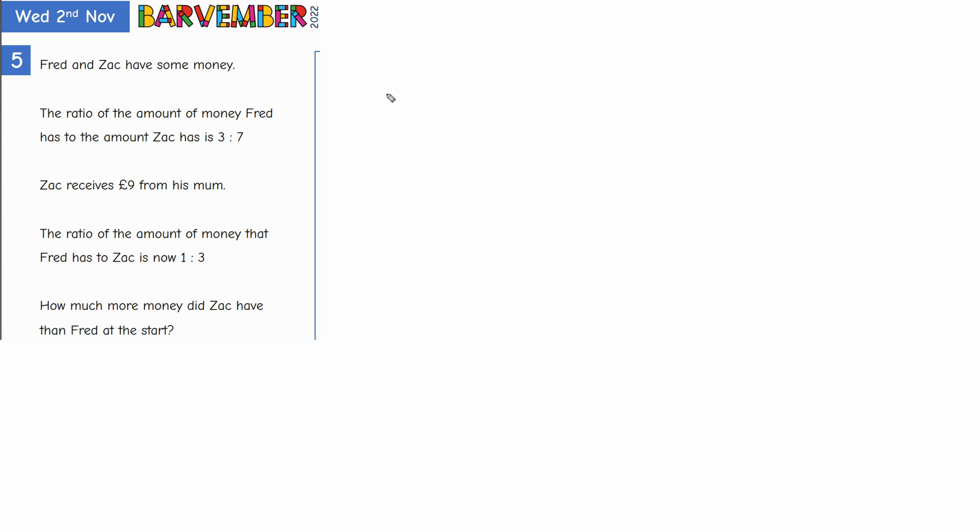So we've got Fred and we've got Zach. Now we're going to be comparing things. We've got two different bars, two separate bars. Fred to Zach is three to seven. So three to seven, that's what I'm going to draw something to represent that.